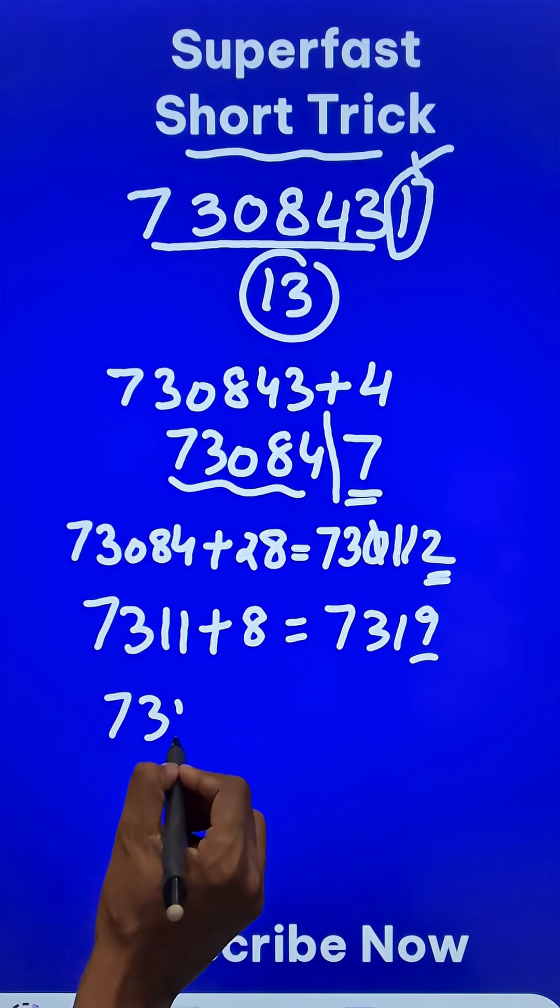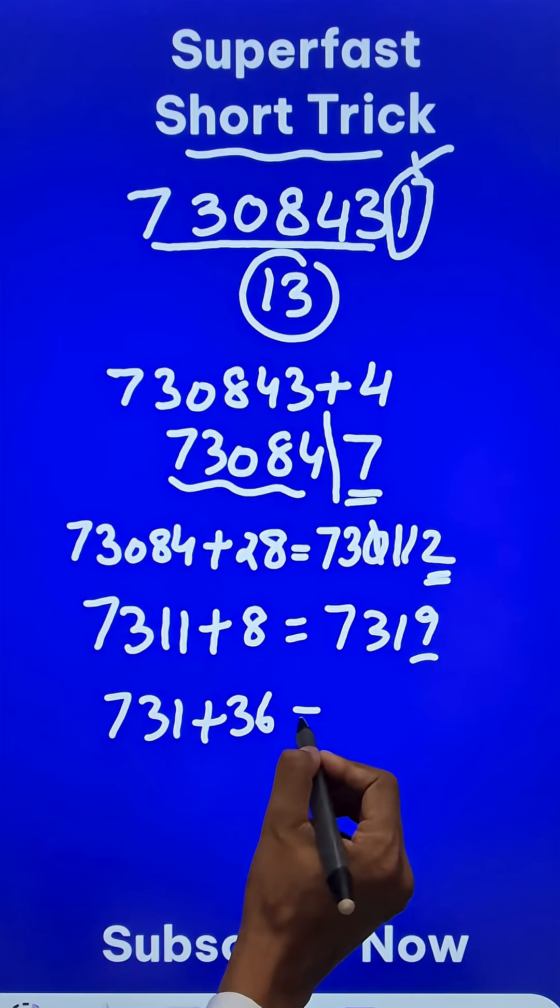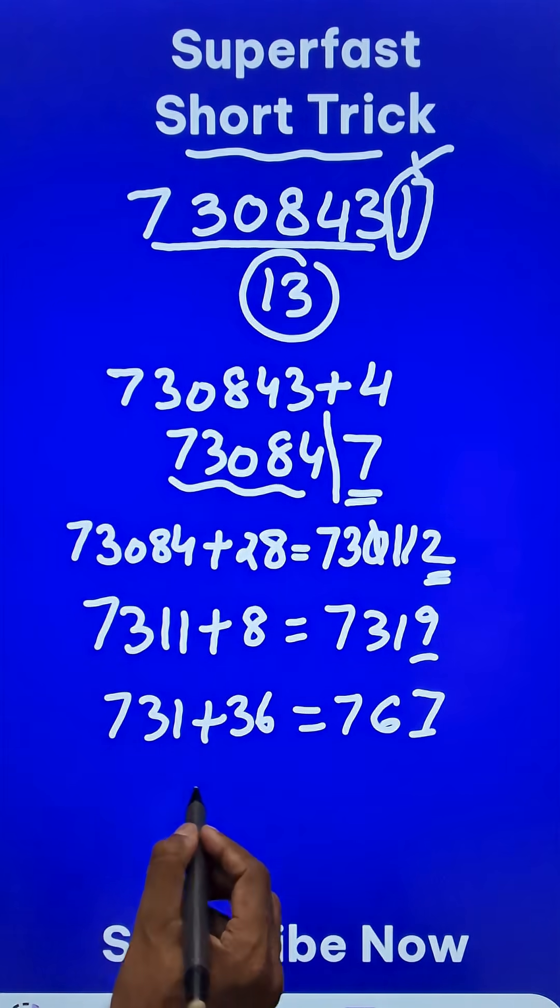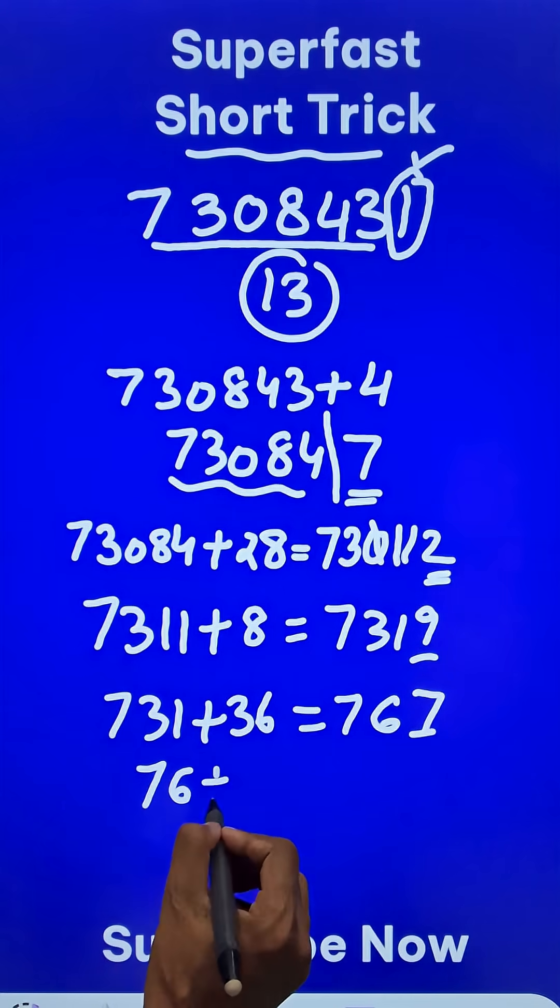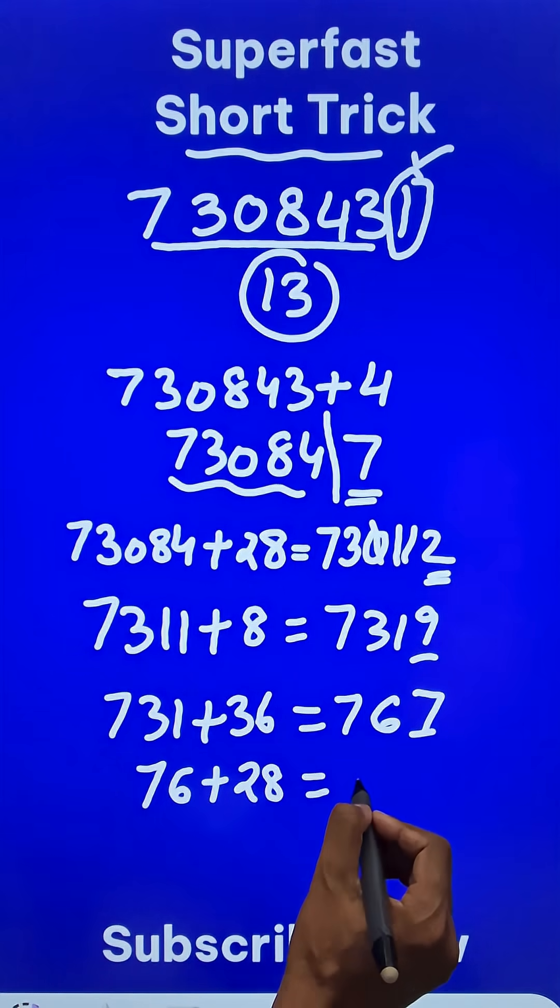Separate out the last digit. 7, 3, 1 plus 9, 4s are 36. That gives us 767. Separate out the last digit. 7, 6 plus 7, 4s are 28, gives us 104.